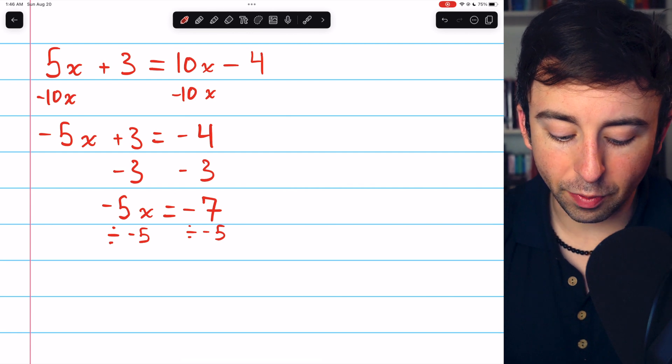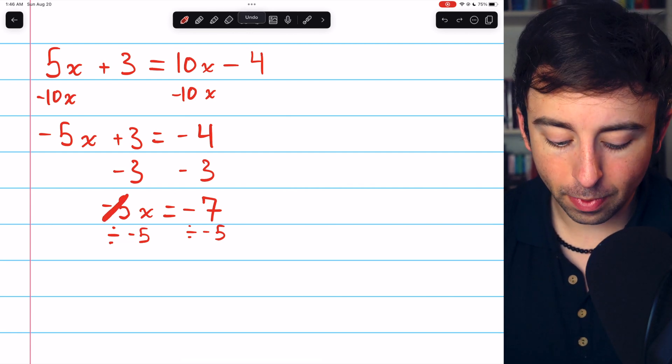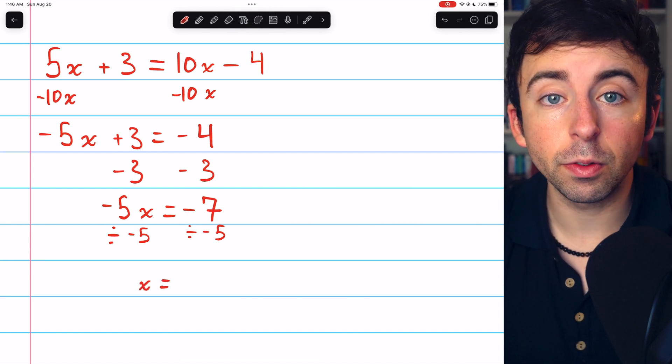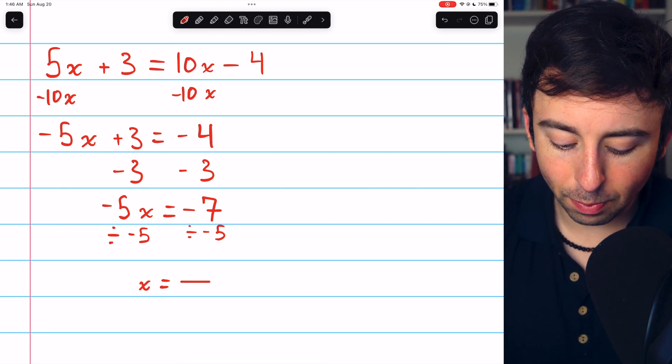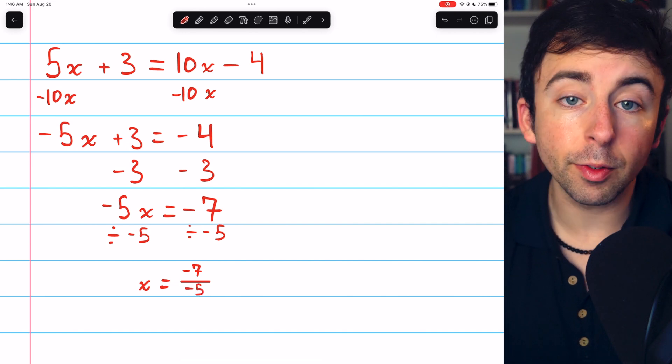On the left, the division by negative 5 will cancel out with that factor of negative 5, and so finally, we'll have x by itself. On the right, negative 7 divided by negative 5, we can simply write that as a fraction, negative 7 over negative 5.